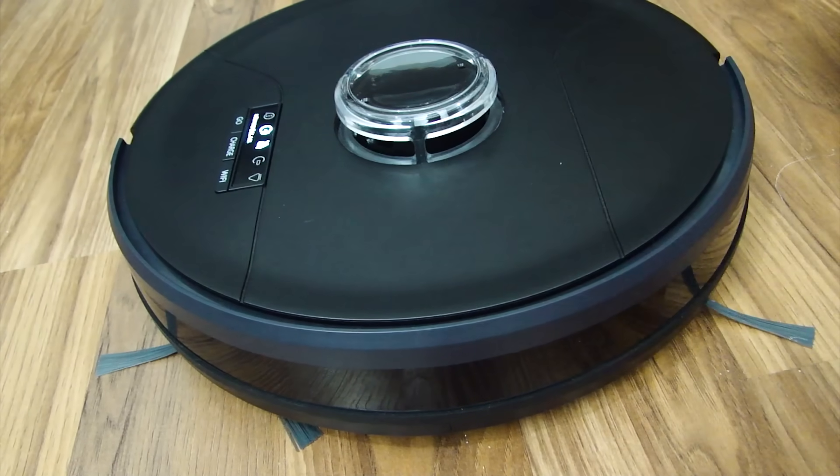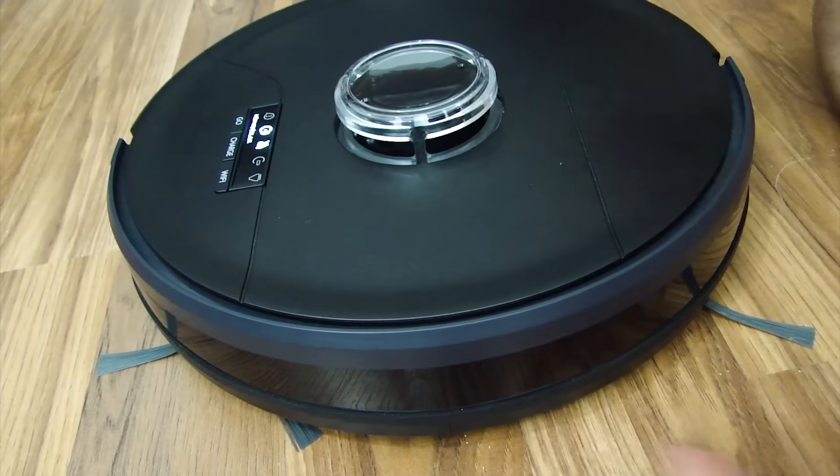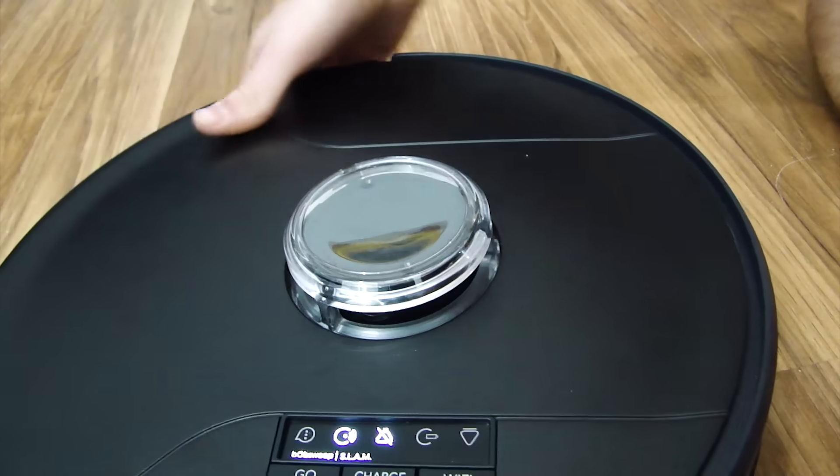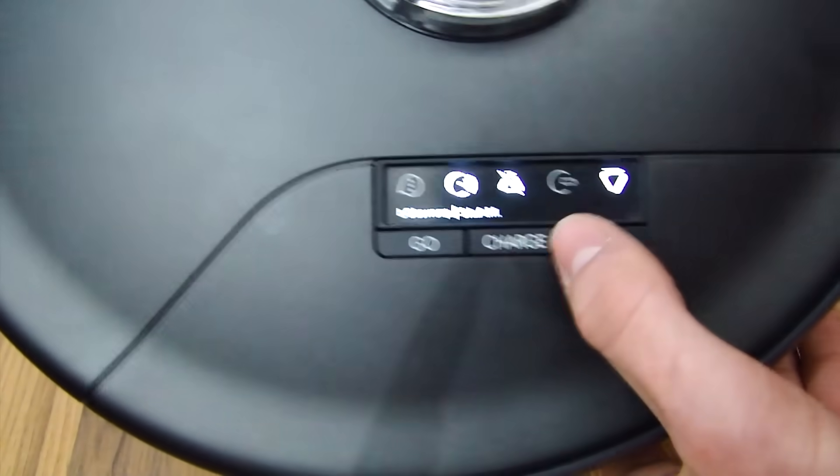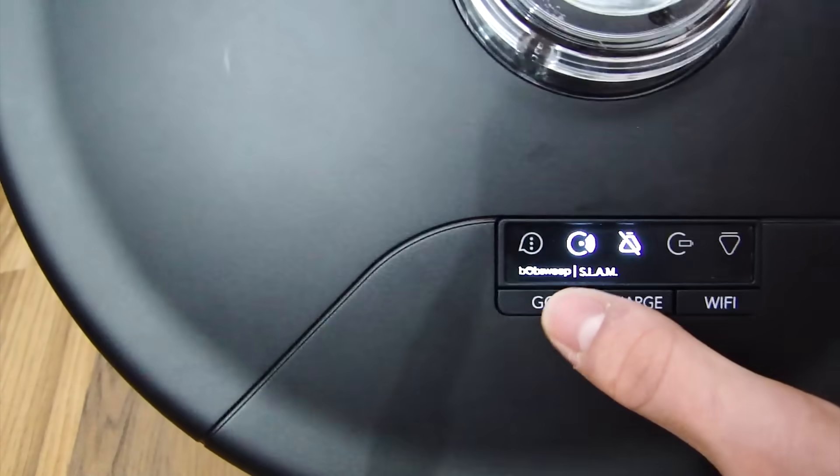So Bob has so many extra features because the app could literally just update and give him another feature. So technically he's got like infinite but you know I'll show you through some of them. So over here there's these three icons, go, charging, Wi-Fi. So you can just tell him to charge with just pressing the button on top of him.